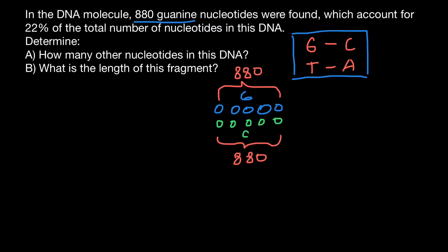And also we know that guanine accounts for 22%. That means that cytosine also would account for another 22% in this double-stranded DNA.